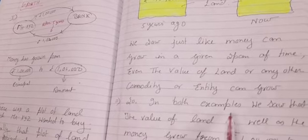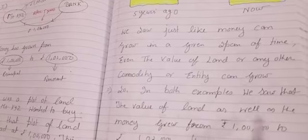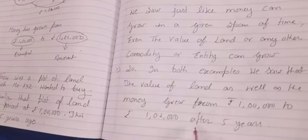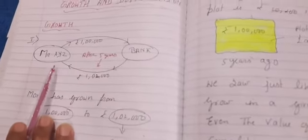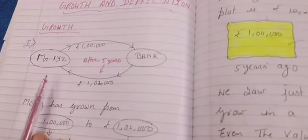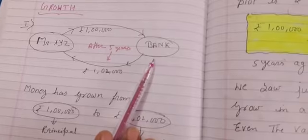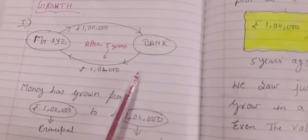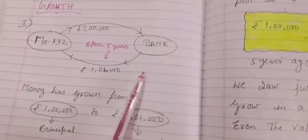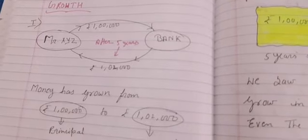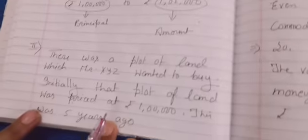In both examples we saw that the value of land as well as the money grew from 1 lakh to 1 lakh 2,000 after 5 years. In the first example I connected this to previous exercises on compound interest, where principal becomes amount when compounded annually, half-yearly, or quarterly at a given rate for a fixed time. Similarly, we are going to learn about growth in the value of land or any property.